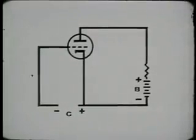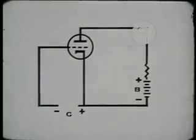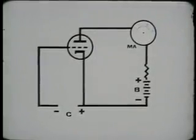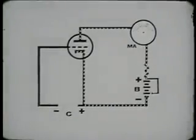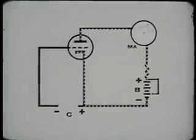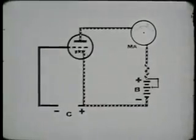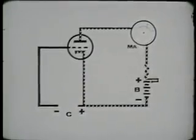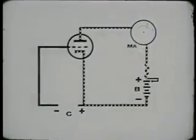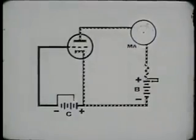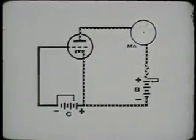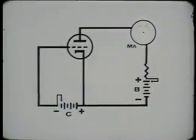The saturation and cutoff voltages can be determined without a manual. A meter in the plate circuit will show how much current will flow when a fixed B-plus voltage is applied. If we increase the plate voltage until further increase makes no further change in plate current, the tube is then saturated. Applying a specific negative voltage on the grid decreases the plate current. This negative voltage is increased until the plate current meter reads zero — the tube is now cut off.